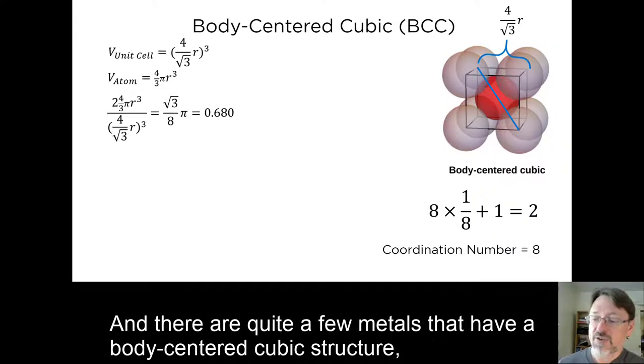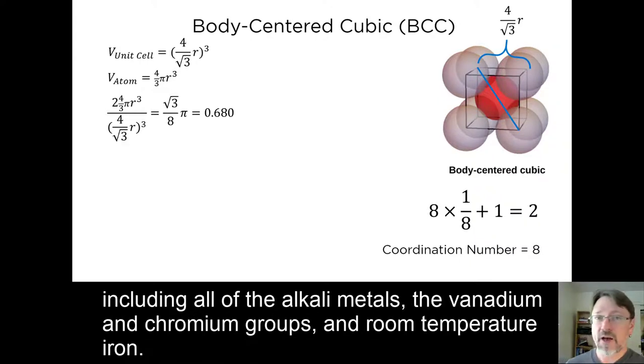And there are quite a few metals that have body-centered cubic structure, including all of the alkali metals, the vanadium and chromium groups, and room temperature iron.